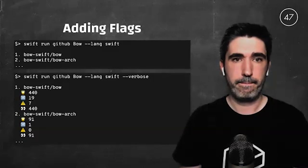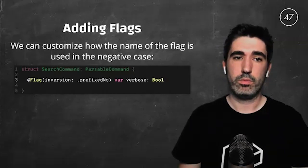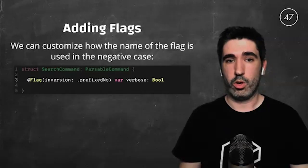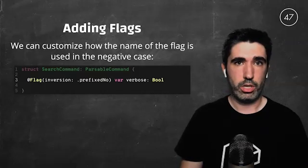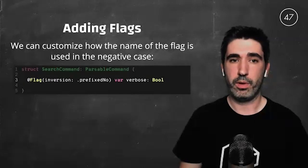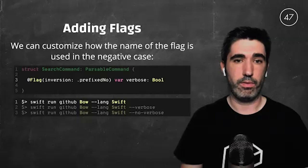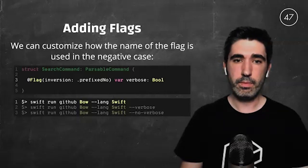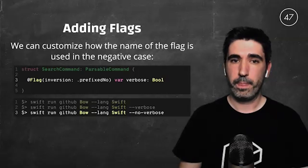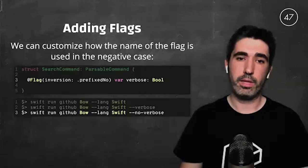Sometimes we want to be explicit about the negative case. We can customize how the flag name is used when we want to explicitly disable it, through the `inversion` parameter of the `@Flag` property wrapper. In this case we chose `prefixNo`. That means when we omit it, we implicitly disable the flag — making it false. When we add `--verbose`, we set it to true. And when we add `--no-verbose`, we are explicitly making it false.